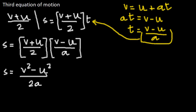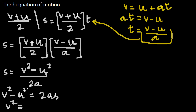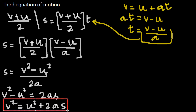Finally, we take 2a and multiply it with s, so we get 2as is equal to v squared minus u squared. Writing v squared minus u squared on the left-hand side and 2as on the right, we rearrange to get v squared equal to u squared plus 2as. That is our final expression for the third equation of motion.